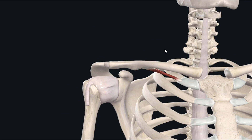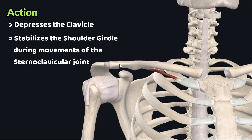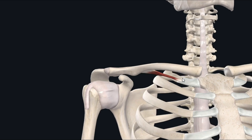The subclavius muscle functions to depress the clavicle and stabilizes the shoulder girdle during movements of the sternoclavicular joint. Another function is elevation of the first rib — when this muscle contracts, it elevates and draws the first rib toward the clavicle, thereby helping in inspiration.